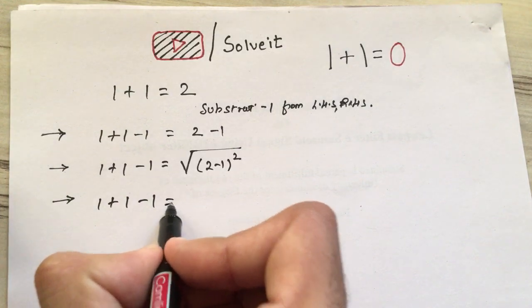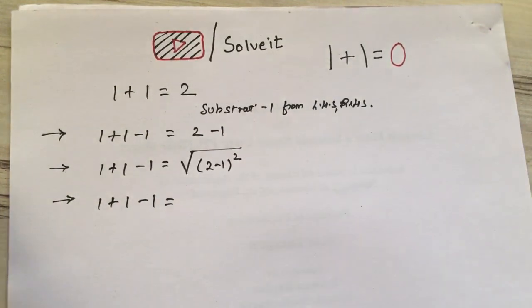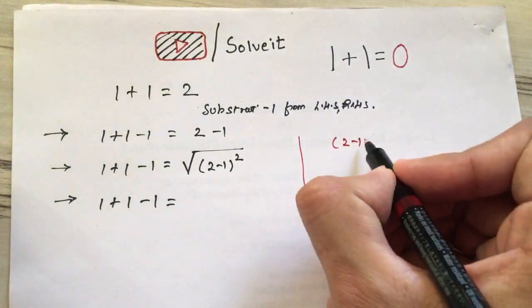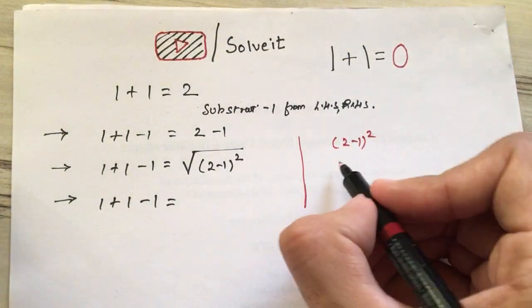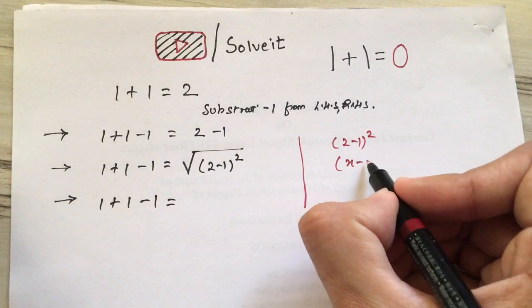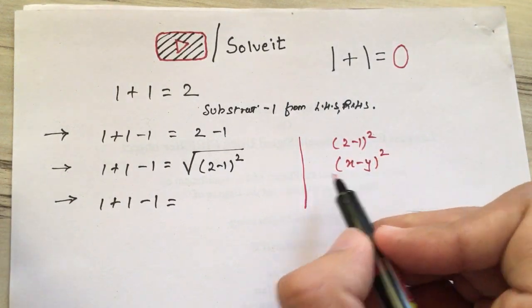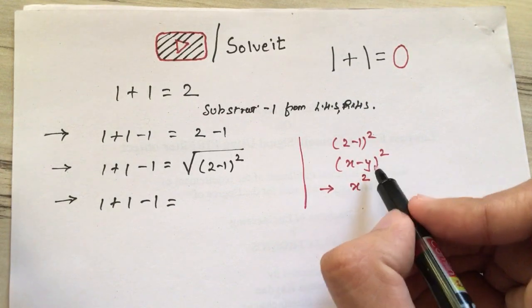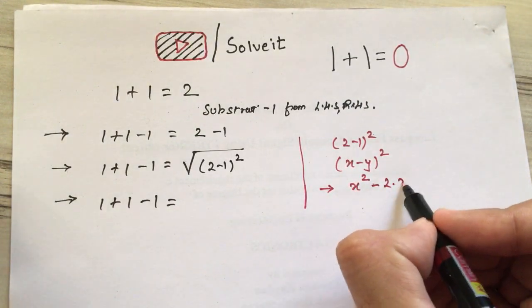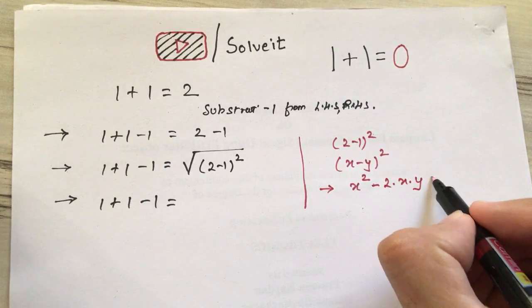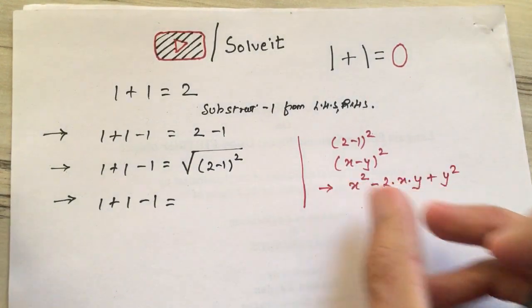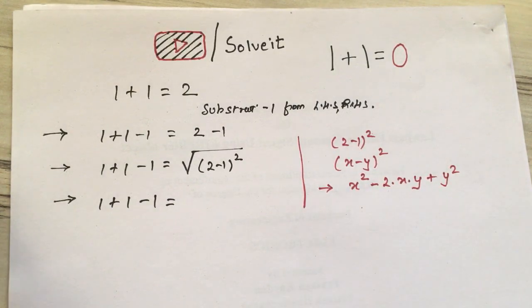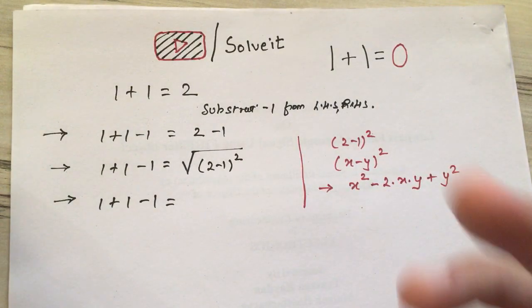In the next step, we have 1+1-1 equals √(2-1)². If you could see here, (2-1)² represents a property: (x-y)², isn't it? If we expand it, we would be getting x²-2xy+y². This is a universal property we have learned in high school.